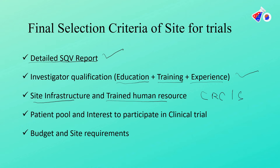It is critical that the Principal Investigator has an adequate patient pool and genuine interest in participating in the clinical trial. A PI might have a patient pool but may not be sufficiently motivated to recruit — these are two separate aspects that need to be evaluated. Finally, the study budget and the site's requirements in order to work in the clinical trial are also considered.